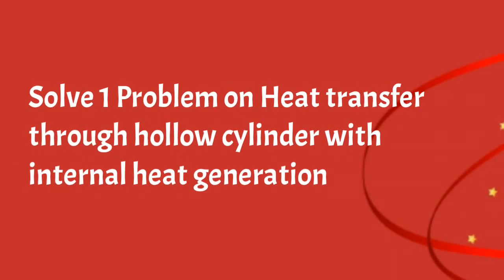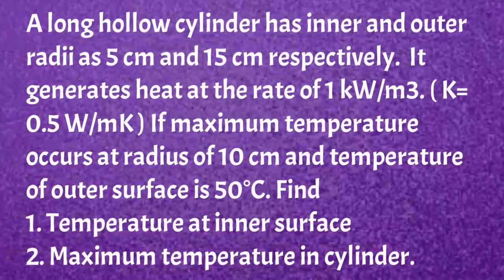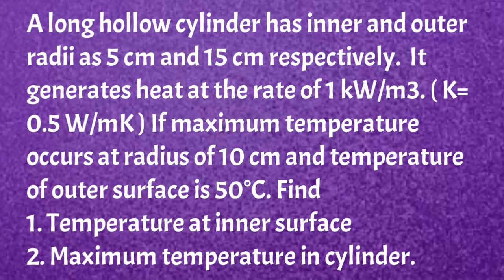We will solve a problem on heat transfer through a hollow cylinder with internal heat generation. A long hollow cylinder has inner and outer radii of 5 cm and 15 cm respectively. It generates heat at the rate of 1 kW per m³ where k is equal to 0.5 W per m·K. The maximum temperature occurs at a radius of 10 cm and the temperature of the outer surface is 50°C. Find: first, the temperature at the inner surface; second, the maximum temperature in the cylinder.